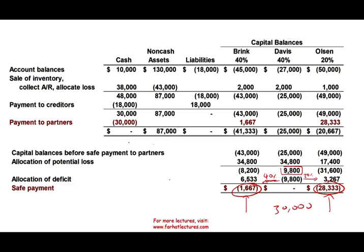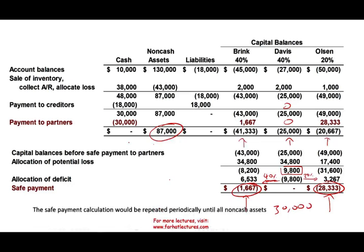What we're left with is $87,000 in non-cash assets. Brink has a credit balance of $41,333, Davis has $25,000, and Olson has $20,667. Davis did not get any money after this sale because in the worst case scenario he would be wiped out first. Once we make another sale of the remaining $87,000 in assets, we'll prepare another schedule and do the allocation again — this process repeats itself.